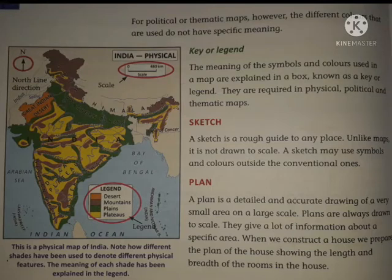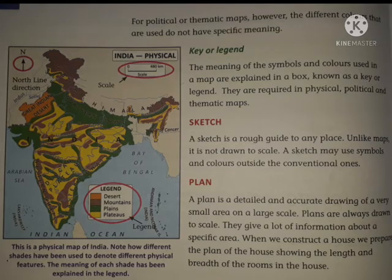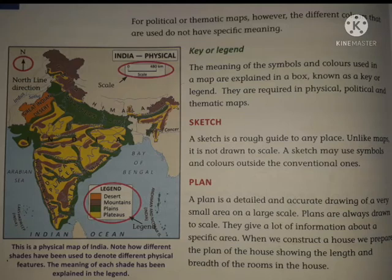The meaning of symbols and colors used in maps is explained in what is known as the key or legend. Everything is explained there — the scale, the north direction, and the legend entries such as blue color represents water, brown represents higher elevation, and orange represents something else — all written on the side of the map. This is known as the key or legend.